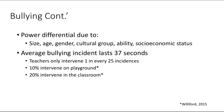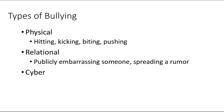We know there are power differentials based upon age, gender, ability, socioeconomic status, and size. The interesting piece is that bullying behaviors happen pretty quickly — the average bullying incident lasts about 37 seconds. It's pretty amazing they go by that quickly, and that's by design. As a result, teachers only intervene once in every 25 incidences — that's a 10% intervention rate on the playground and 20% intervention in the classroom. So there's a lot of bullying happening very quickly and we can't catch it all.